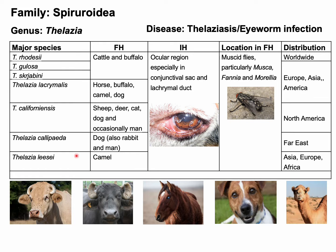Another eyeworm of camel is Telagia laevis. Telagia californiansis, also known as the California eyeworm, can be found in sheep, deer, cat, and dog, and is also recorded in humans. Telagia calipeda is a parasite of dog but can also be found in rabbit and humans. The location of all these parasites is in the eye, especially in the conjunctival sac or lacrimal duct. Telagia scatjavini can also be found in the vitreous humor of the eye of buffalo.